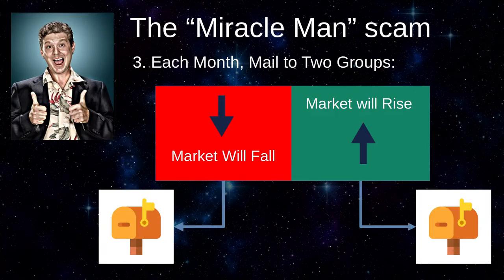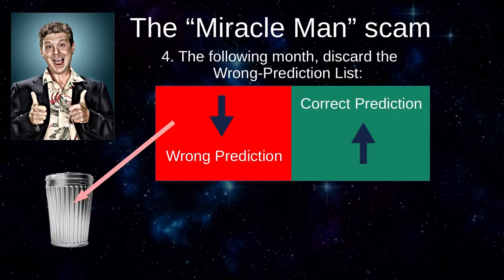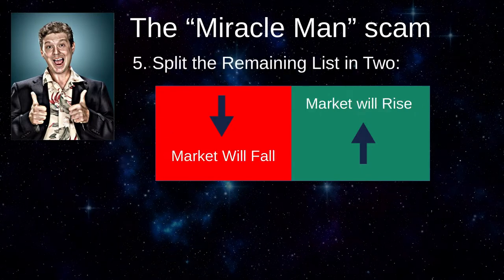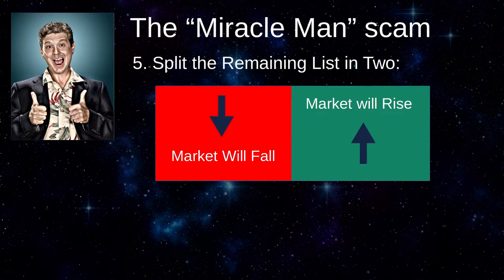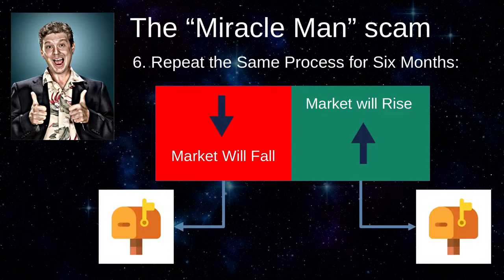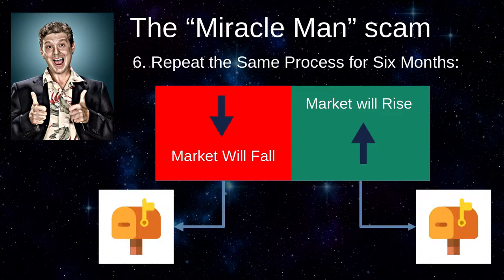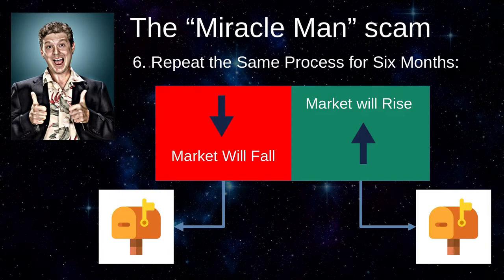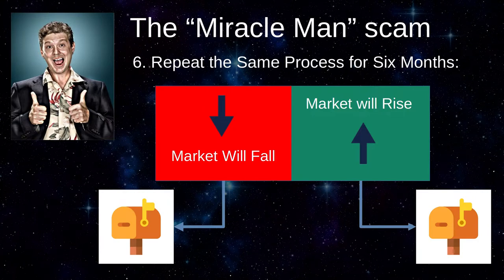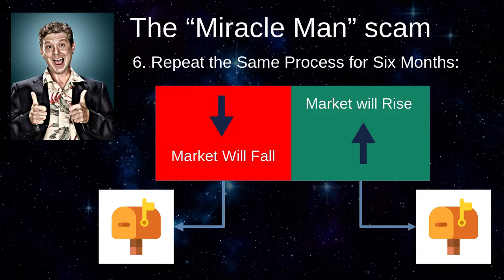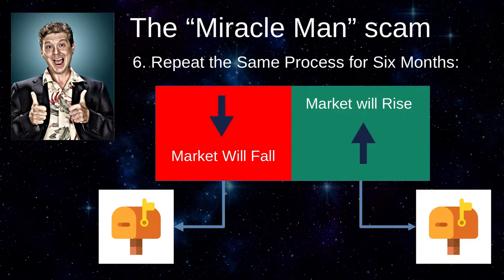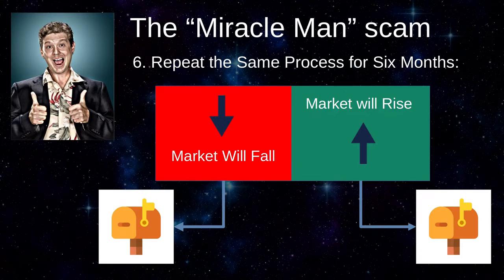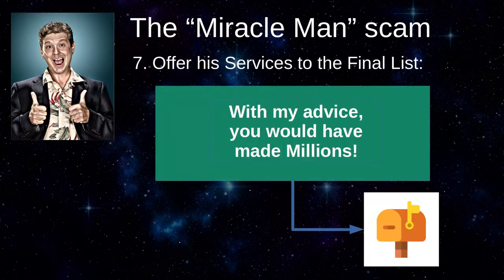After a month has passed, Miracleman throws away half the addresses — those that got a wrong prediction — and divides the remaining list in two and starts over. For six months, Miracleman repeats the process, each time throwing away half the addresses. This means a very large address list becomes very small, but those recipients have gotten a seemingly miraculous run of accurate market forecasts. Unless they're very skeptical, those few may want to give Miracleman control of their portfolios.